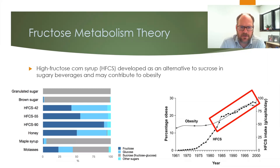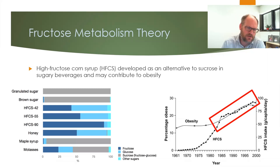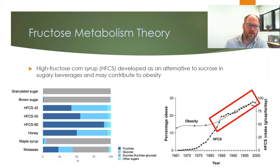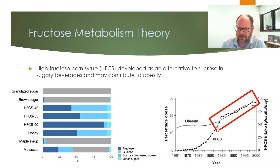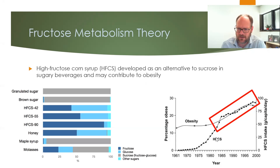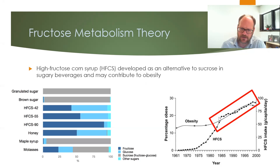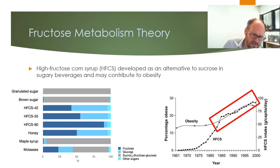One theory that has been circulating is that fructose — and the use of fructose sweeteners — has been contributing to obesity. This is interesting in the context of this course because it ties directly to the biochemistry pathways we've been learning about. High fructose corn syrup was introduced in the late 1960s and early 1970s and saw a dramatic increase in the food and beverage industry up until the 2000s. At the same time, there was a really dramatic rise in obesity rates, leading to suggestions of a possible link.